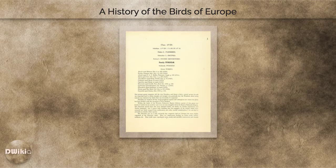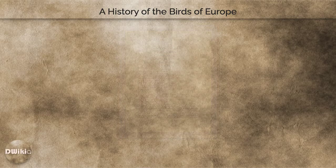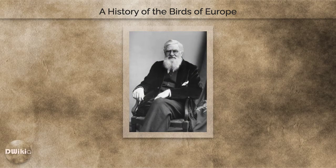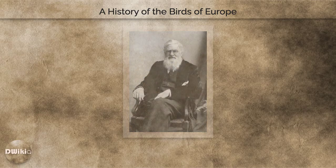It is mainly written by Henry Eales Dresser, although Richard Bowdler Sharpe co-authored the earlier volumes. It describes all the bird species reliably recorded in the wild in Europe and adjacent geographical areas with similar fauna, giving their worldwide distribution, variations in appearance, and migratory movements.